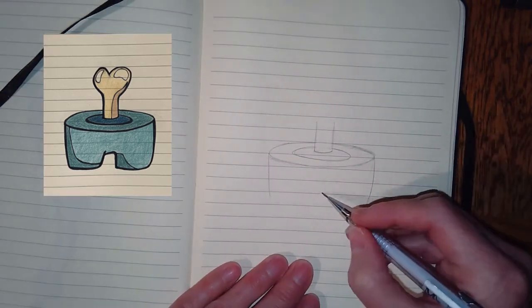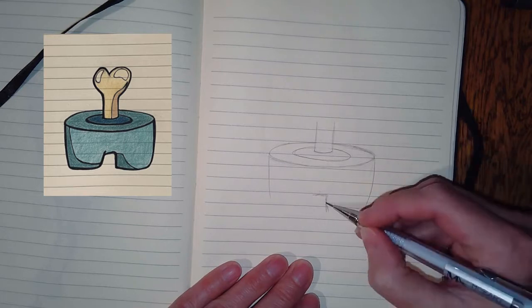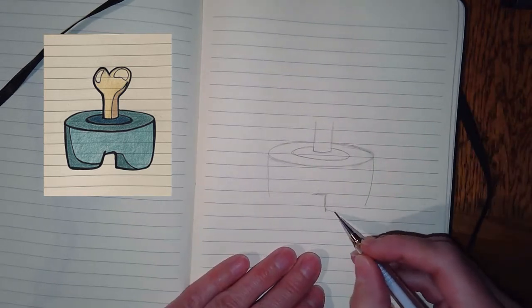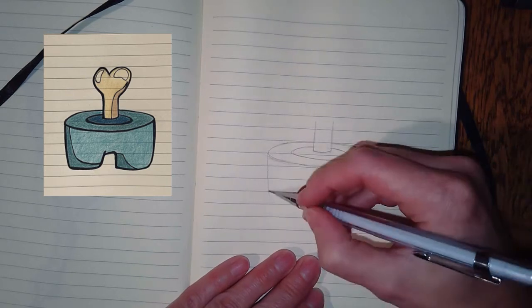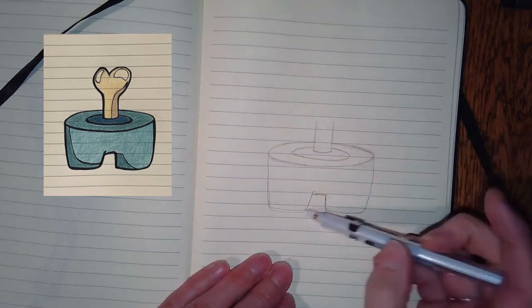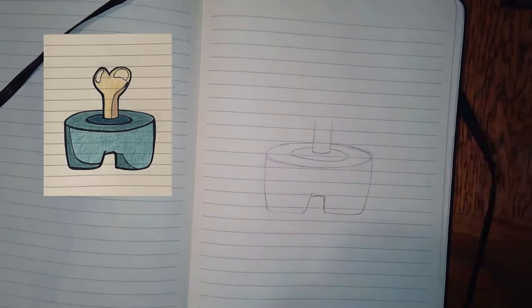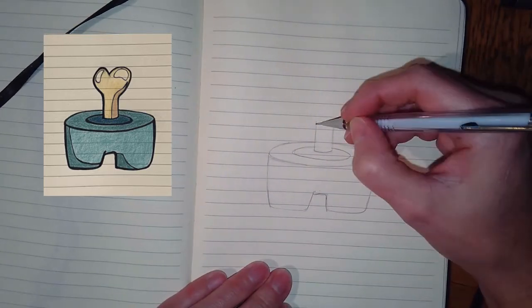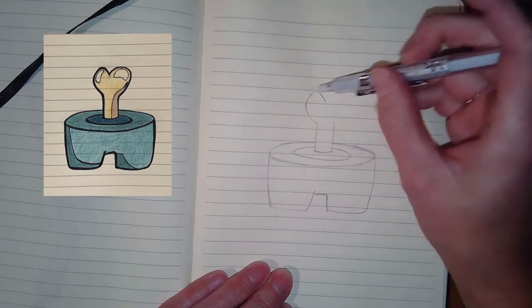Then the body—the legs kind of taper in slightly, and that width where the crotch area starts is about halfway down. Then you've got your little stubby legs. I'm really paying attention to that negative space in between the two legs. The left side is angled and the left leg, I don't think it matters if you draw it a little bit longer to give the idea that it's closer to you.